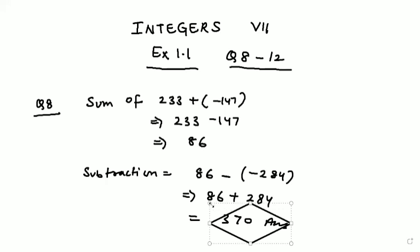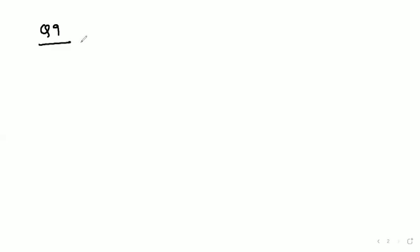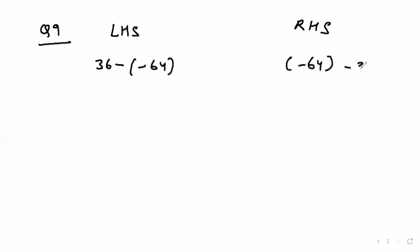Now let's come to question number 9. Question number 9 says: find 36 minus (-64) and (-64) minus 36 — are they equal? We will write LHS for the left-hand side and RHS for the right-hand side. LHS will be 36 minus (-64), and RHS will be (-64) minus 36. LHS becomes 36 plus 64, and RHS remains -64 minus 36.